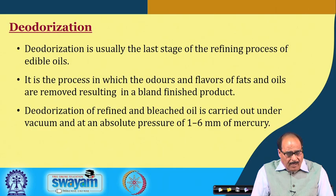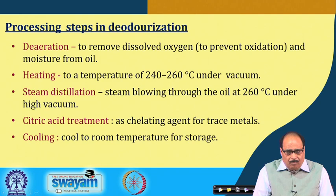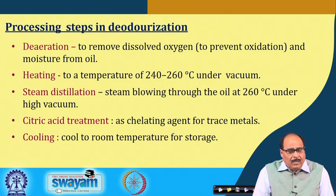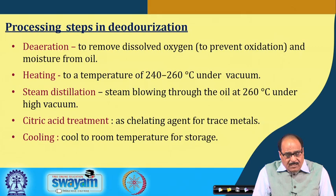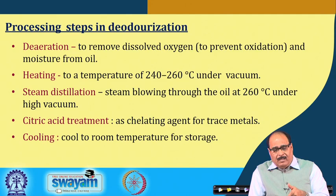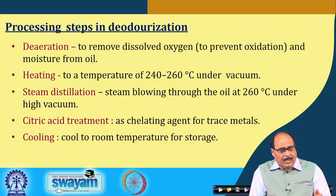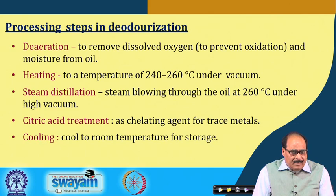Deodorization of the refined and bleached oil is carried out under vacuum at an absolute pressure of 1 to 6 millimeters of mercury. The processing steps include deaeration to remove dissolved oxygen — particularly to prevent oxidation — and to remove moisture from the oil. The oil is then heated to around 240 to 260 degrees Celsius under vacuum. Steam distillation follows: steam is blown through the oil maintained at around 255 to 260 degrees Celsius under high vacuum, during which fatty acids are evaporated and distilled out.